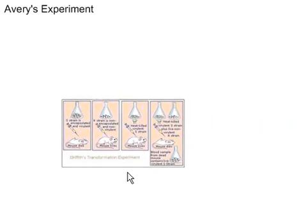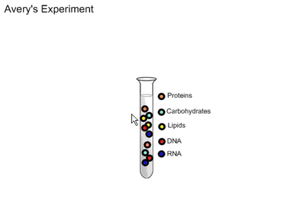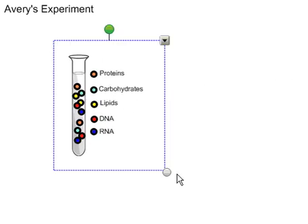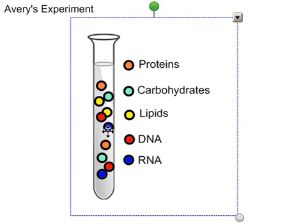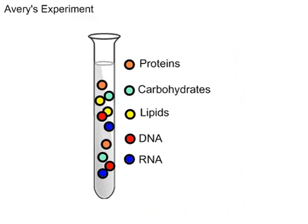He came up with a neat experiment. He decided to repeat the experiment with the mice, and he knew that bacteria were only made out of five things. Here are the five things: proteins, carbohydrates, lipids — which are fats — DNA, and RNA. That's what he knew bacteria were made out of.